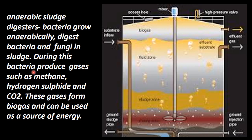During this process, the anaerobic bacteria produce gases. The gases produced include nitrogen gas, methane, hydrogen sulfide, and carbon dioxide. This gas can be used as a fuel — this is biogas — and can be used as a source of energy.